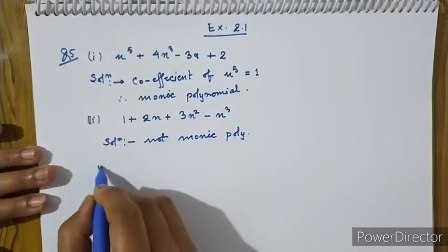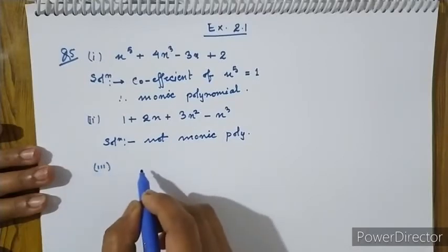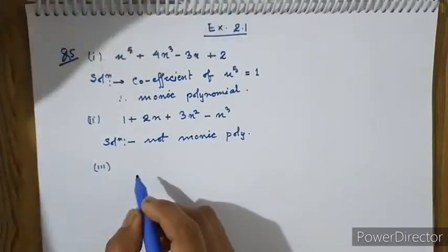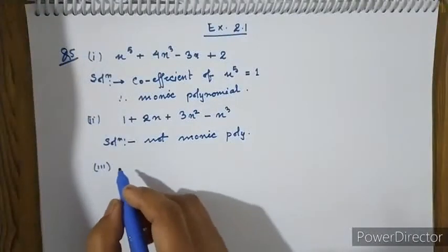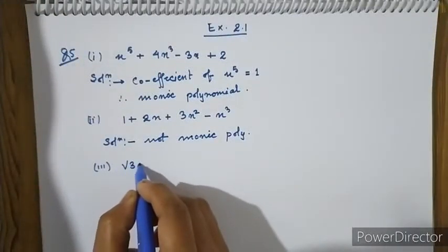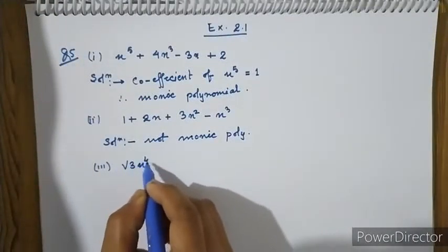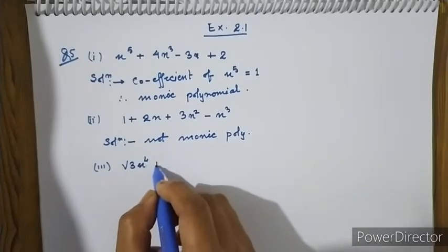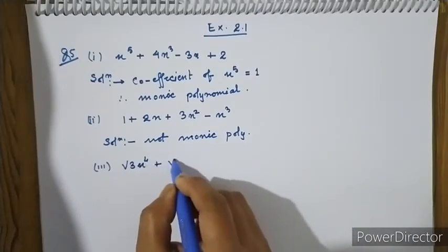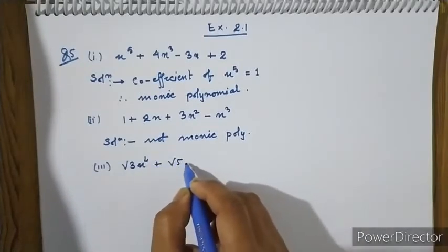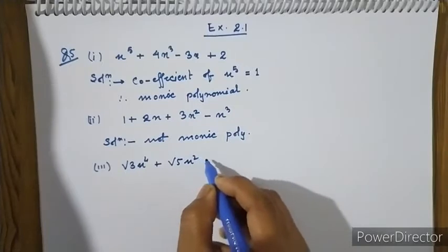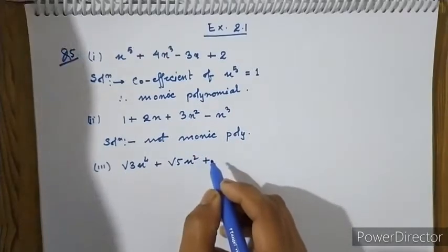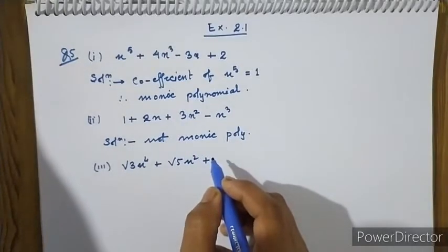Roman numeral 3: let us see root 3 times x to the power 4, plus root 5 squared, plus root 7.